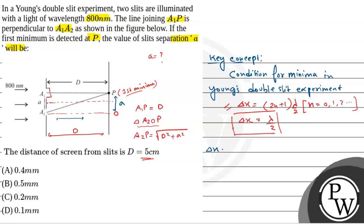So the path difference del x is what? Simply A2P minus A1P, which is equals to lambda by 2 for first minimum. Now it's go hum solve karenge right? So that means root over of d square plus a square minus d is equals to lambda by 2.